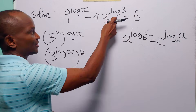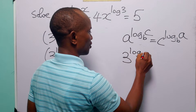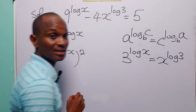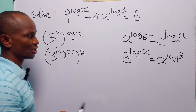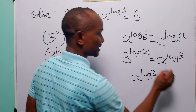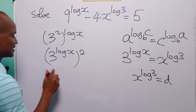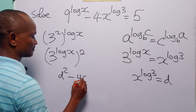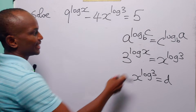Now look at this — it is very easy to see that 3 to the power log x is equal to x to the power log 3. With this observation, all you have to do is make a substitution: let x to the power log 3 be equal to d. Then this equation becomes d squared minus 4 times d is equal to x.